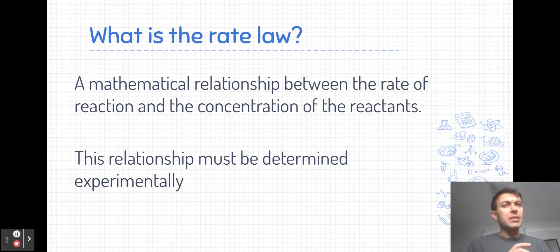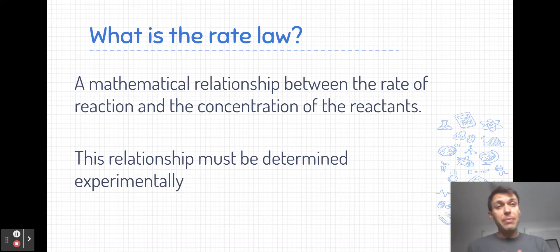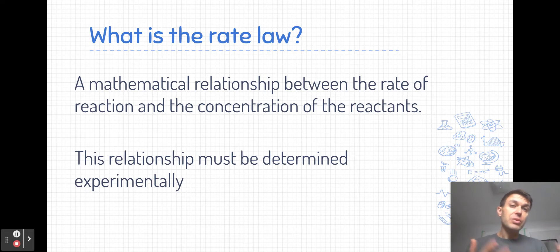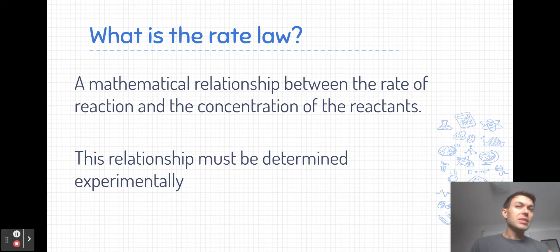What is the rate law? It's a mathematical relationship between the rate of a chemical reaction and the concentration of the reactants. This is a relationship that, unlike some others you may learn in physics, we must determine experimentally for each unique chemical reaction. We cannot look at a chemical equation and its stoichiometry to determine the rate law — we must collect experimental data and determine the rate law for that particular reaction.